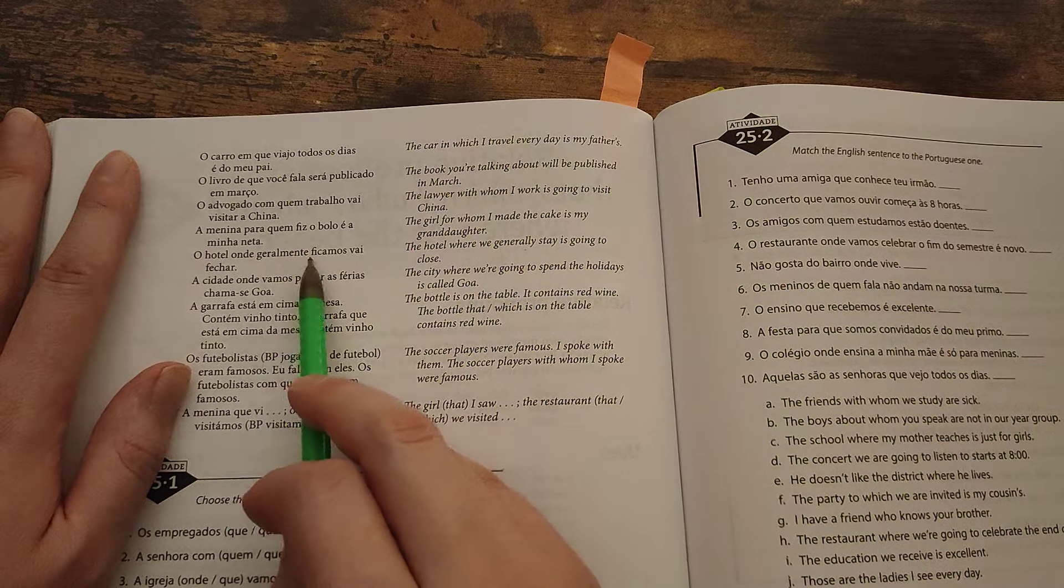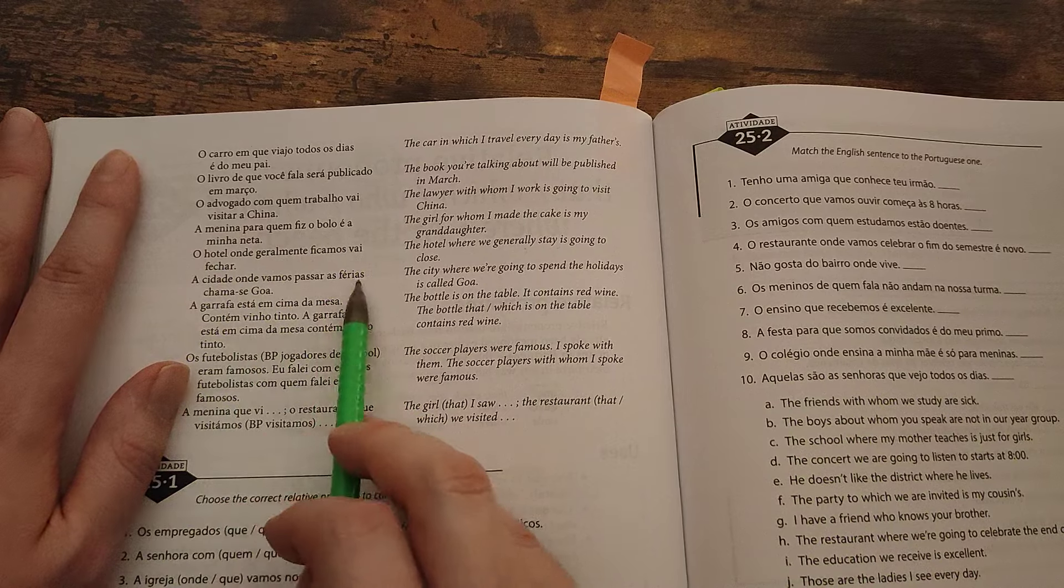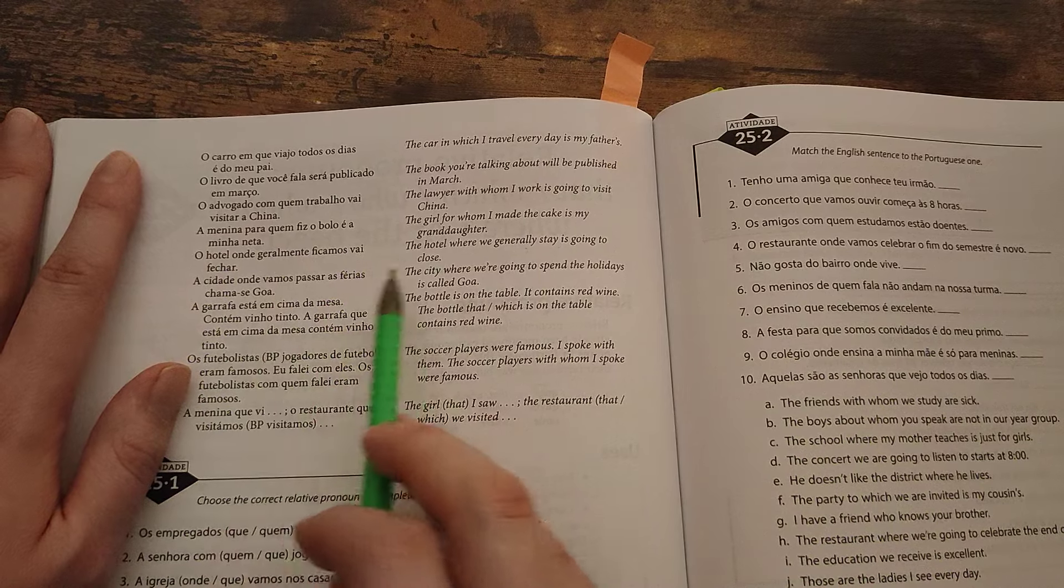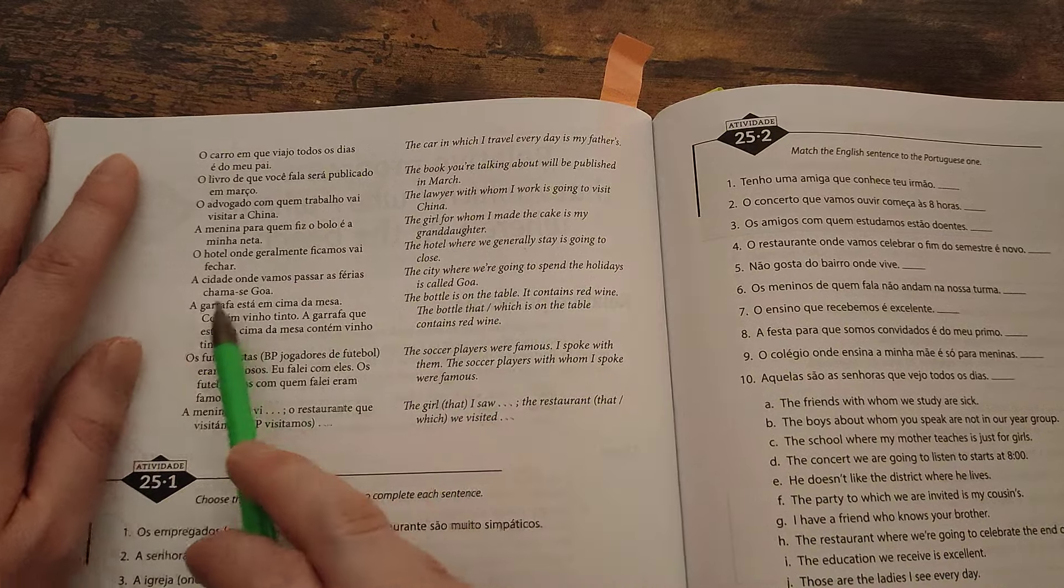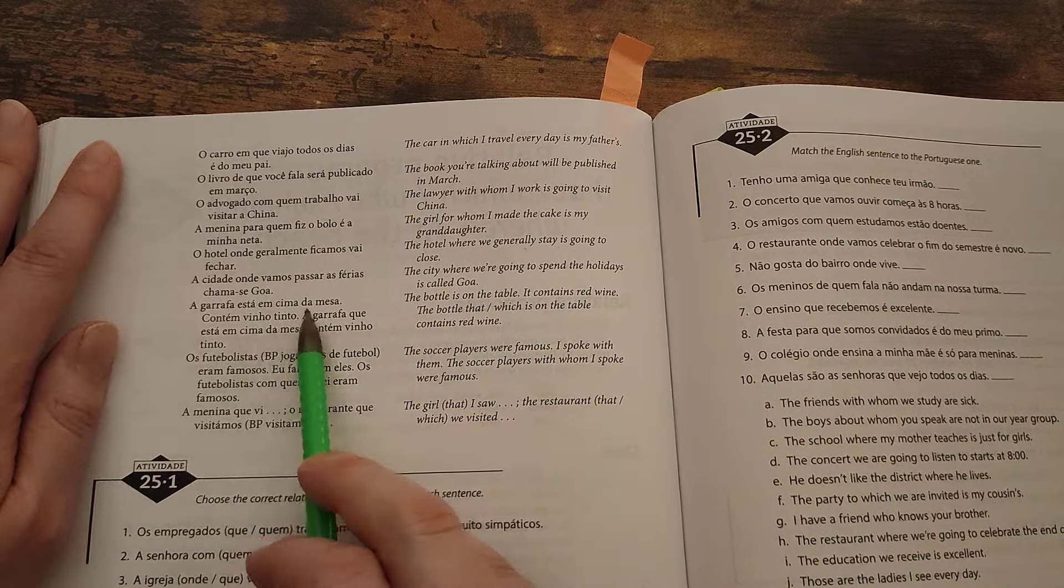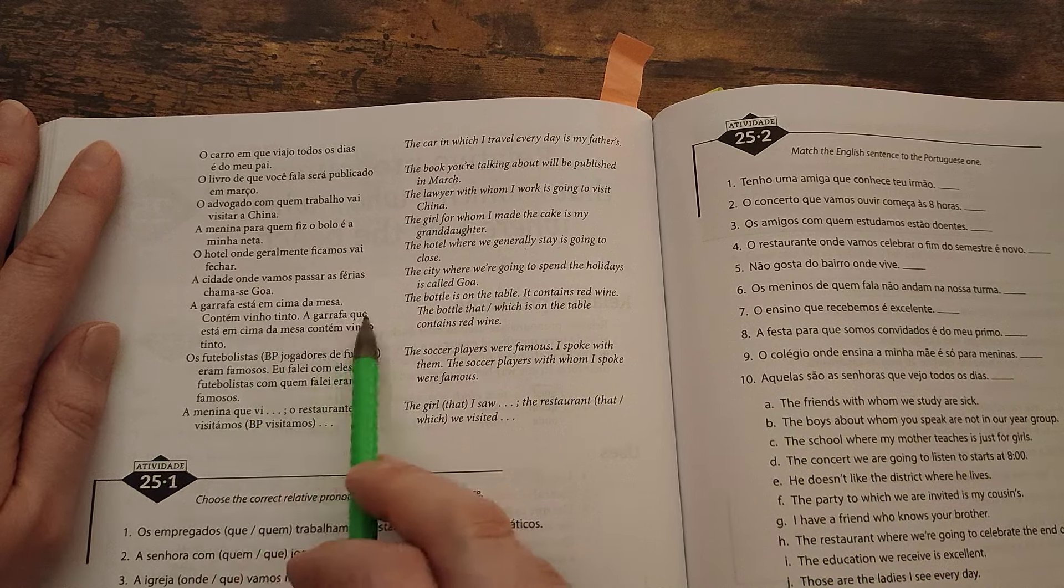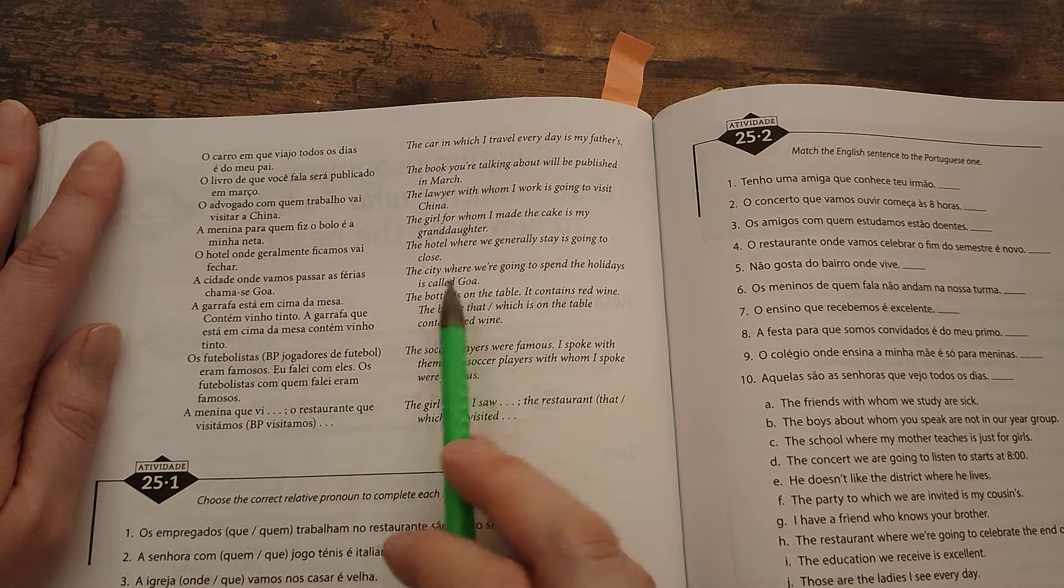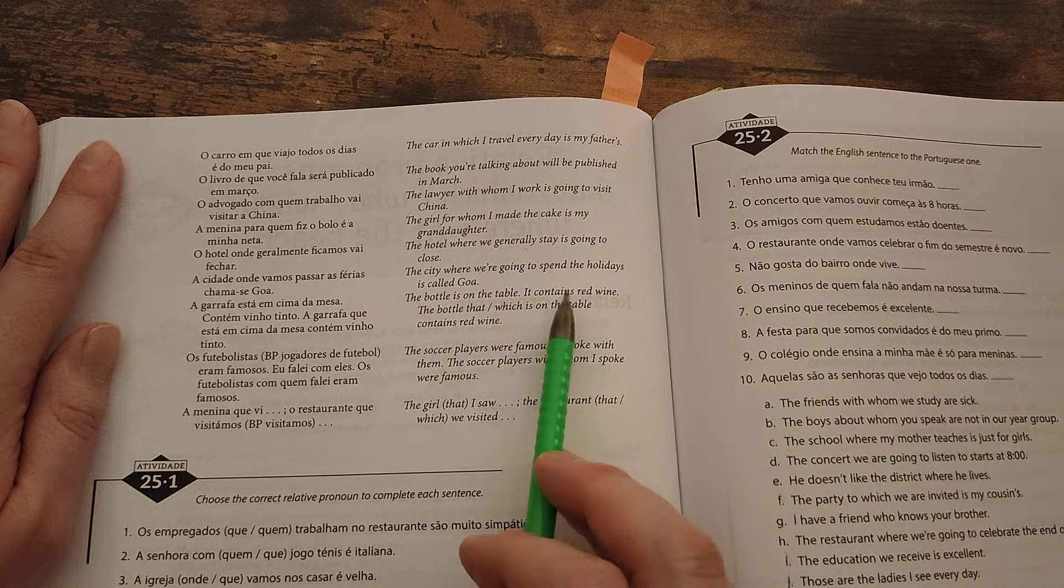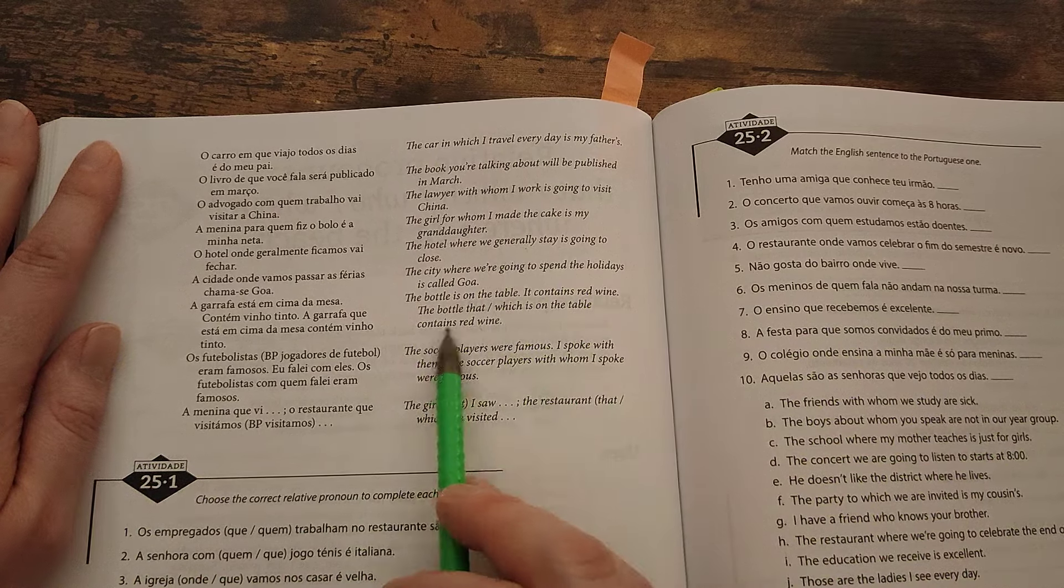A menina para quem fiz o bolo é a minha neta. The girl for whom I made a cake is my granddaughter. O hotel onde geralmente ficamos vai fechar. The hotel where we generally stay is going to close. A garrafa está em cima da mesa. Contém vinho tinto. A garrafa que está em cima da mesa contém vinho tinto. The bottle is on the table. It contains red wine. The bottle which is on the table contains red wine.